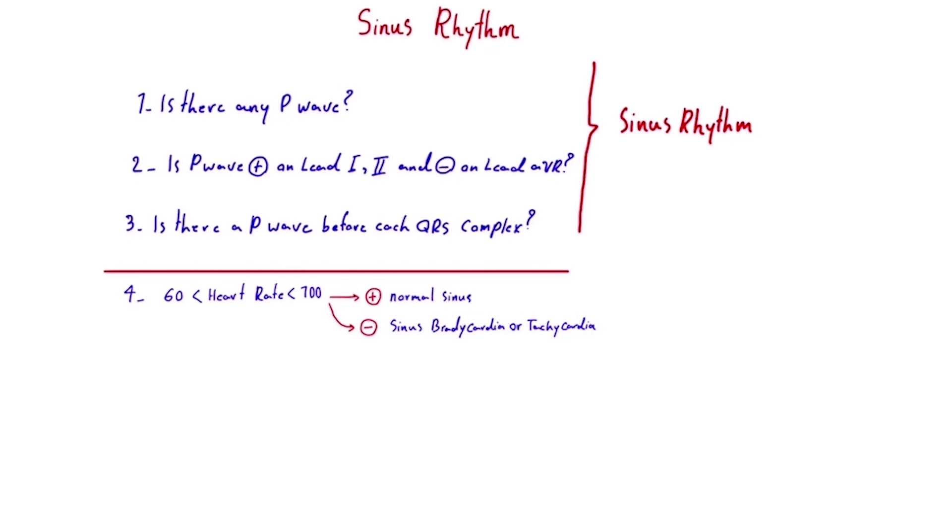This happens when the SA node weakens and another focus within the heart takes over as the dominant pacemaker. In that case, the answers to our four questions will change. And from those changes, we can identify what type of rhythm we are dealing with. In general, depending on which part of the heart assumes control, we can classify four main types of rhythms.